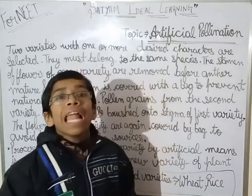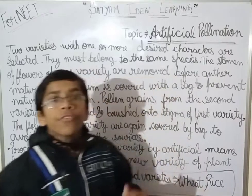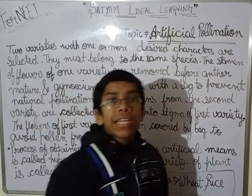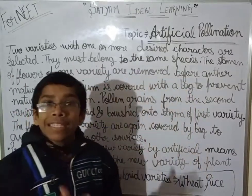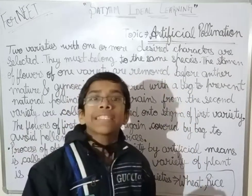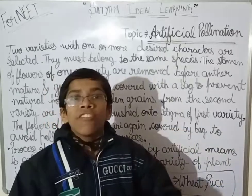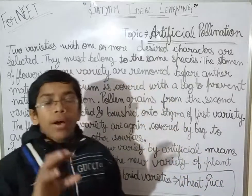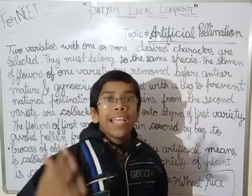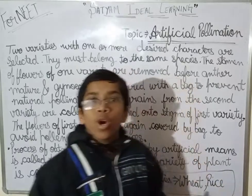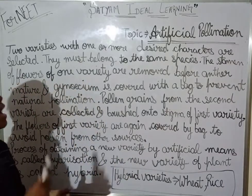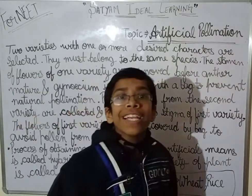By artificial means, we make a plant undergo pollination. The combination of disease-resistant characters and high-yielding characters will produce a new variety of plant that is both disease resistant and has very high yield. This is how a new variety is produced by artificial pollination.